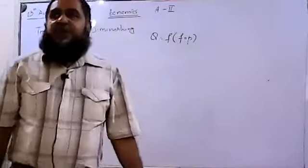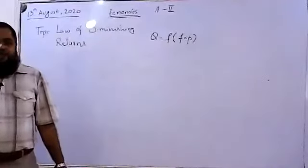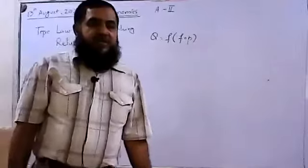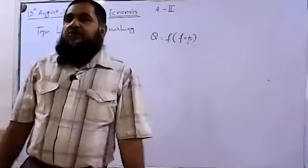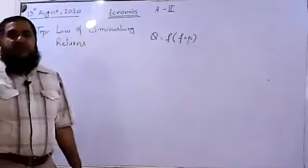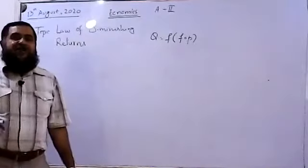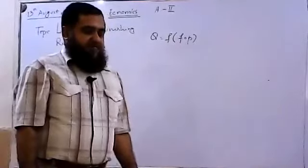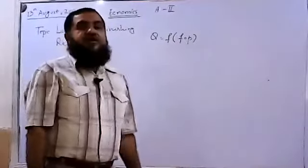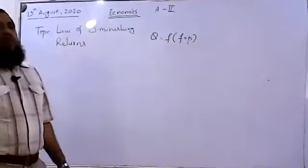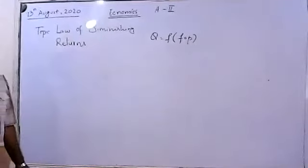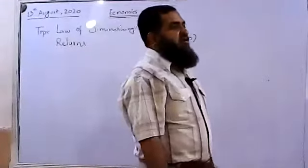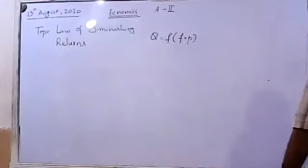We have also explained things like total physical product — how total output is produced by all the workers. That is the total physical product of the workers. And we also defined marginal physical product as the additional output produced by an additional worker. And average physical product of labor tells us how per-worker output is produced, showing us the productivity of workers. When total output is divided by the total number of workers, that gives us the average physical product.